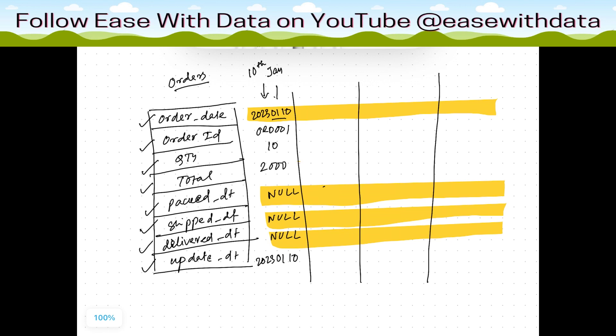Now consider on 10th Jan we got a record where we have order date as 2023-01-10, order ID ORD-001, quantity 10, total 2000, and since the order is not packed, shipped, or delivered, all three columns are null. The update is on the same date.